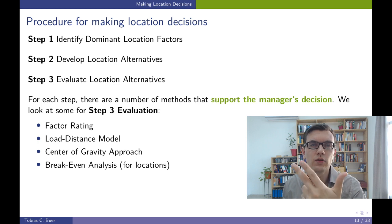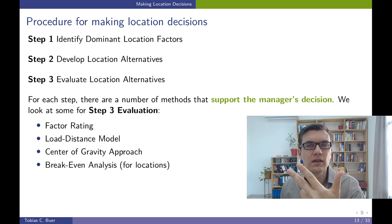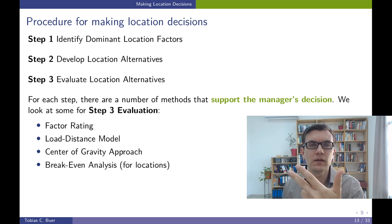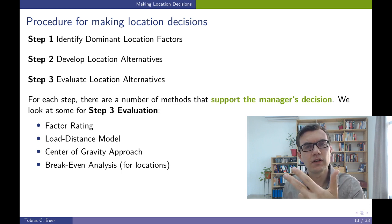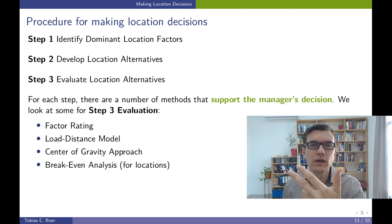In the third step, the task is to evaluate the alternatives — to assess how good each location is at fulfilling the factors identified in step number one.